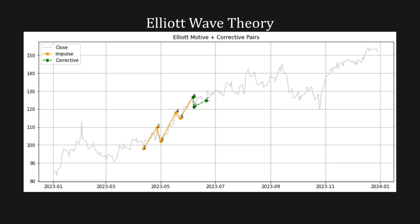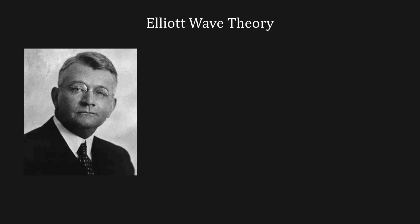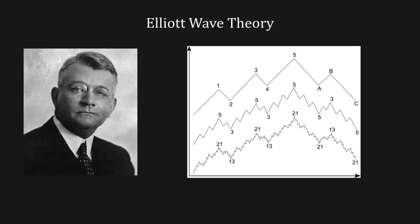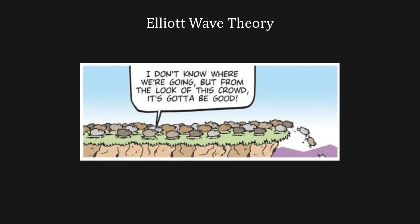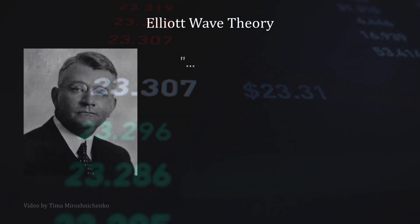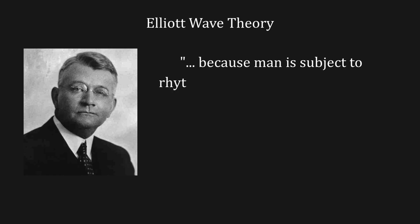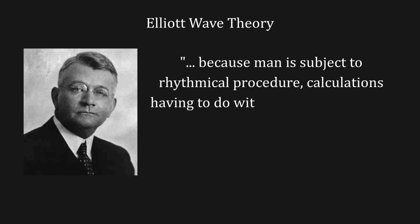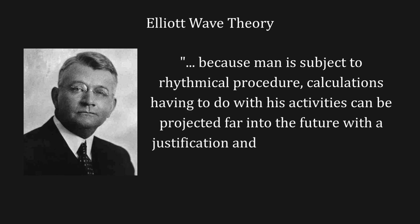Elliott Wave Theory is a technical analysis tool created by Ralph Nelson Elliott, published in his 1938 book titled The Wave Principle, where he noted social principles within market behavior. These social principles are trader psychology or crowd psychology that find their way into price patterns in the form of waves. Elliott stated: because man is subject to rhythmic procedure, calculations having to do with his activities can be projected far into the future with a justification and certainty heretofore unattainable.